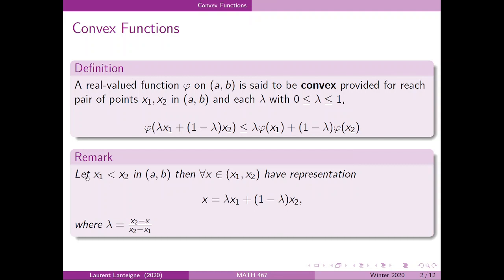Remark that if x1 is less than x2 in the open interval (a, b), then for every x inside x1 and x2 we have the following representation, where lambda is equal to (x2 minus x) divided by (x2 minus x1). All we have to do is solve for lambda and we get this, so that's pretty trivial.